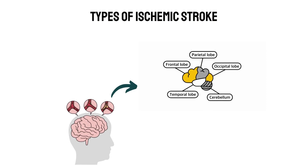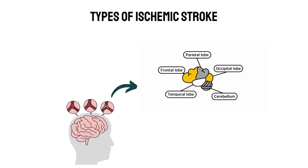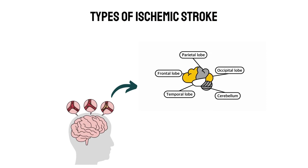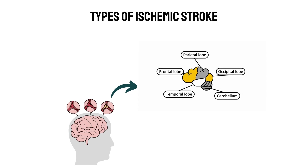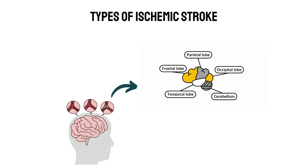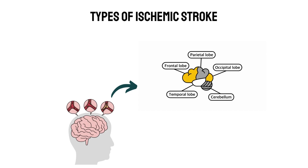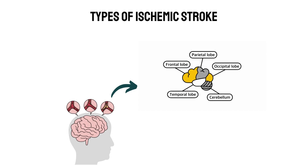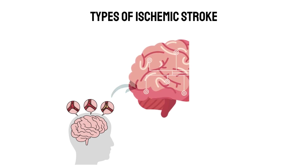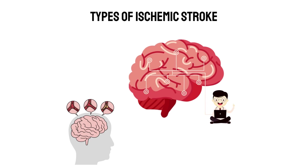Ischemic strokes can present as predefined syndromes as a result of decreased blood supply to specific parts of the brain that correlate with exam findings. This helps clinicians to predict which areas of the brain vasculature will be damaged.